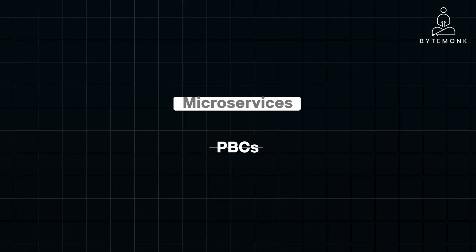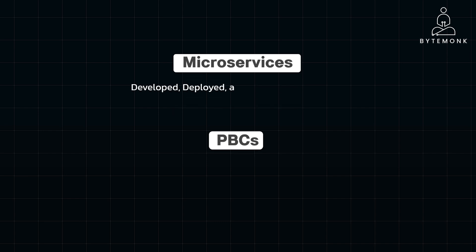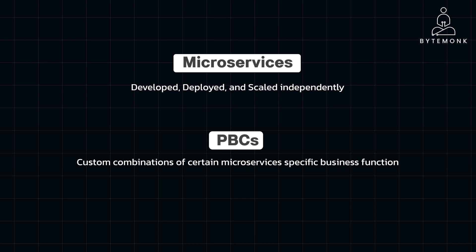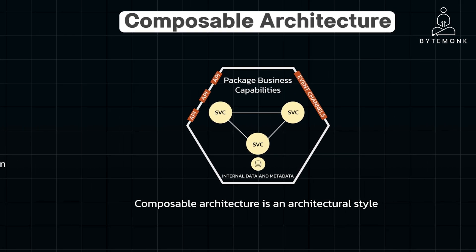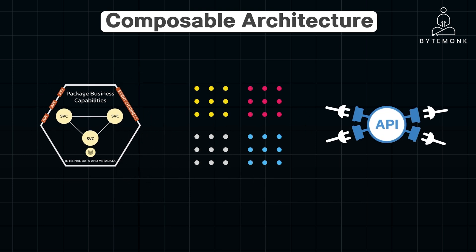The key difference between microservices and PBCs is that microservices are an architectural style defining how we break down an application into independently developed, deployed, and scaled services. PBCs are custom combinations of certain microservices that work together to carry out a specific business function — for example, individual microservices might handle user registration, login, and profile management, while a PBC might encompass the entire user authentication flow. Composable architecture provides the framework for assembling these building blocks into cohesive and functional solutions.